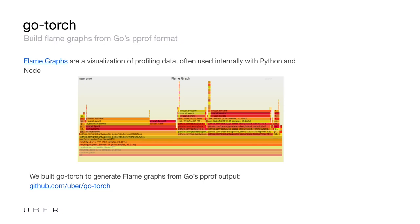You can learn more about flame graphs on Brendan Gregg's page, which is linked from this slide. GoTorch generates these flame graphs from the same data that go tool pprof uses. You can use them with the same profiles, whether you get them from -cpuprofile when running your test, or from the net/http/pprof endpoint.